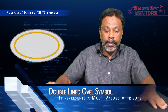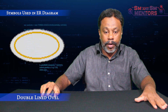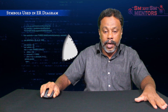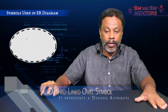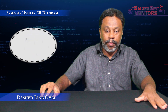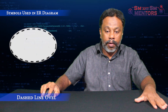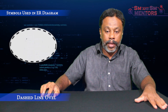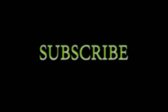The double oval (double-lined oval) represents multi-valued attributes — for example, height is single-valued, while phone number is multi-valued. The dashed oval (dashed-line oval) represents a derived attribute. A stored attribute is shown with a regular oval, while a derived attribute is shown with a dotted/dashed oval.